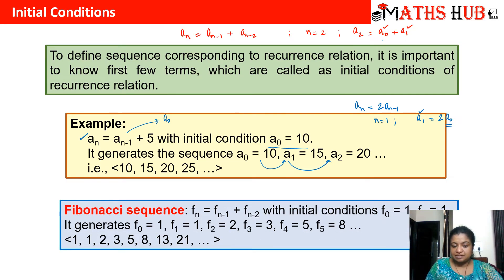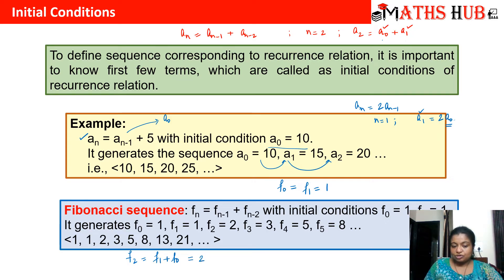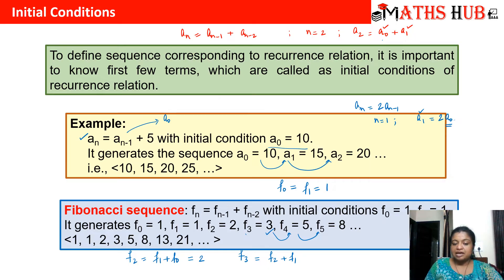A very famous example is the Fibonacci sequence, where the nth term depends on the sum of the previous two terms: fn = fn-1 + fn-2. The initial conditions are f0 = 1 and f1 = 1. Putting n = 2 gives f2 = f1 + f0 = 1 + 1 = 2. Then f3 = f2 + f1 = 2 + 1 = 3. Once f3 is calculated, we can calculate f4, f5, and so on. Two initial conditions were required because each term depends on the previous two terms.